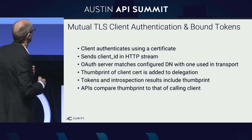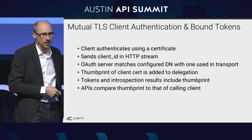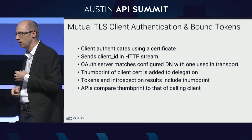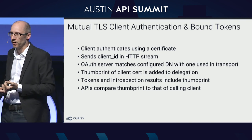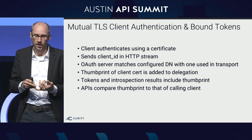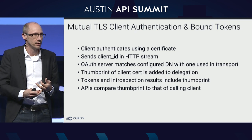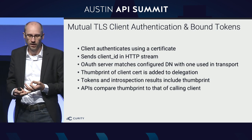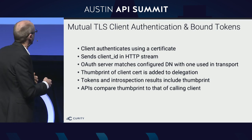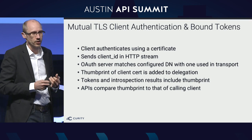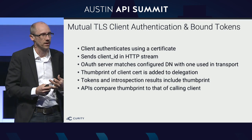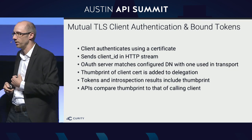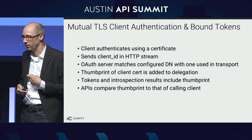To summarize: client authentication using certificates in the HTTP stream, with the client ID configured to use a certain DN in the OAuth server. If it matches, a thumbprint is created and put into the tokens that are minted. Then during token introspection, the API provider can verify that the one calling it with those tokens is the same one to whom the tokens were issued.